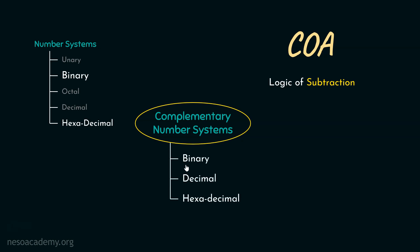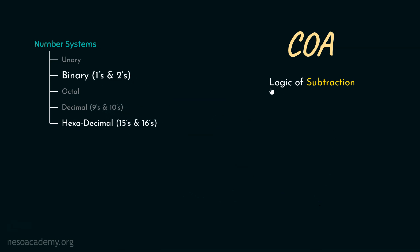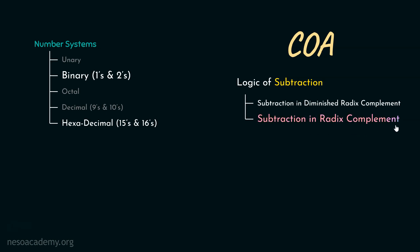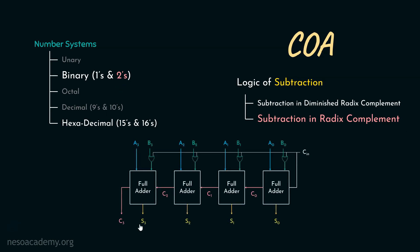We observed complementary number systems for binary, decimal, and hexadecimal. In binary, we had two different complementary number systems: ones and twos. For decimal, the variations were 9s and 10s. And finally for hexadecimal, we observed the 15s and 16s. Once we were done with the complementary number systems, we moved on to the logic of subtraction. There we learned that there are two different logics: subtraction in diminished radix complement and subtraction in radix complement. The second one — subtraction in radix complement — is the most popular one. Our main objective was to focus on the two's complement, and using this concept, we can finally build the adder-subtractor circuit.